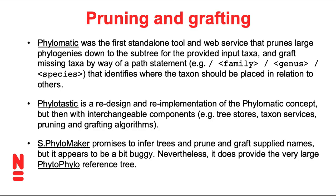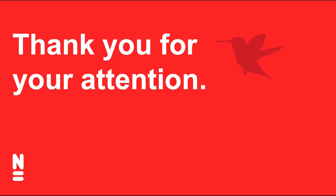Finally, another tool we might interact with is S-Phylomaker, which has also released a very large plant tree. That's actually the tree we've been playing with when using the relational database to compute phylogenetic distances between different crop species. As a toolkit, S-Phylomaker was a little buggy, but the tree is quite large and is sometimes used as a reference tree. These are just some examples of where you might find very large trees and what you might do with them.